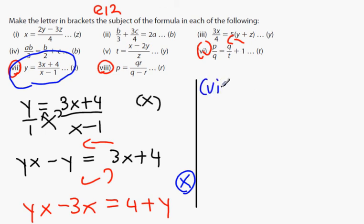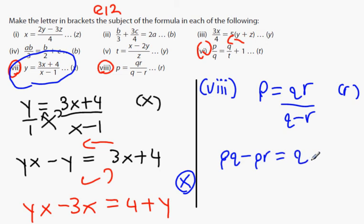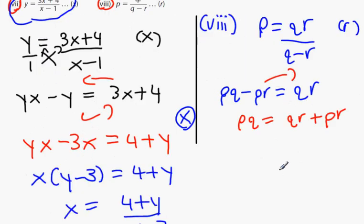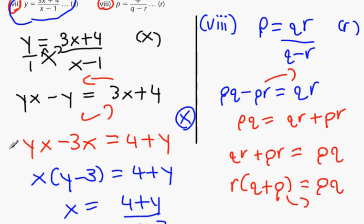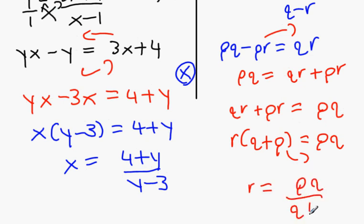Number 8. P equals QR divided by Q minus R. Get R on its own. Can we cross multiply? Yeah. So I'm going to get PQ minus PR equals QR. How many R's do you see? Two. Let's bring PR over this side. And what do we get? PQ equals QR plus PR. Factorize the right-hand side. What happens? Do you want me to spin that around so it looks more like what we're used to? QR plus PR equals PQ. Now what can I do with this side? Take out. Take out the R and end up with Q plus P equals PQ. Bring the Q plus P down. And you're going to get R equals PQ divided by Q plus P.